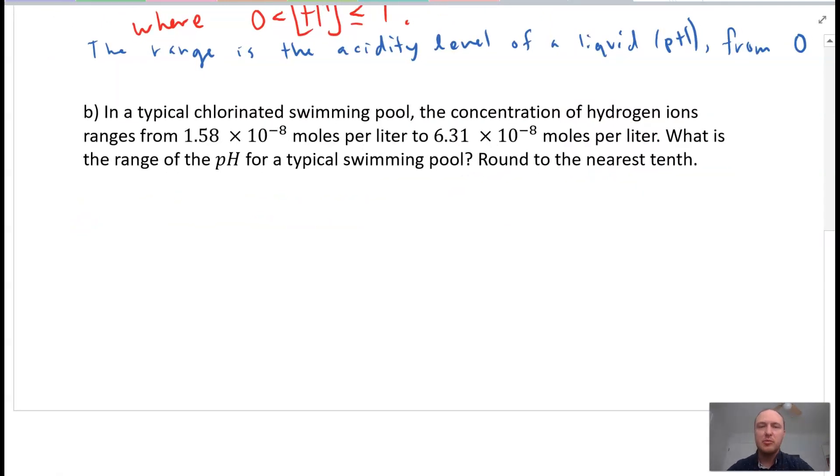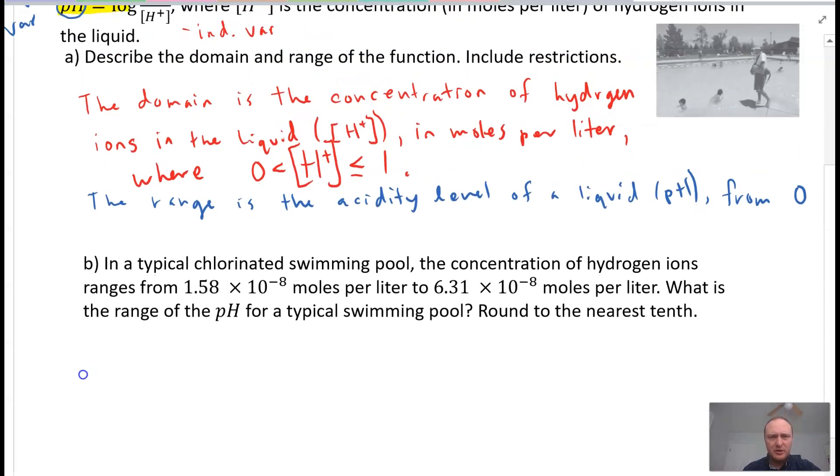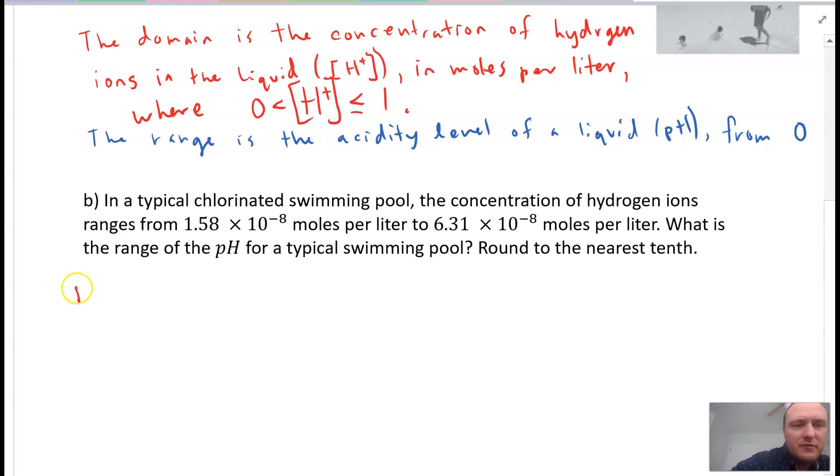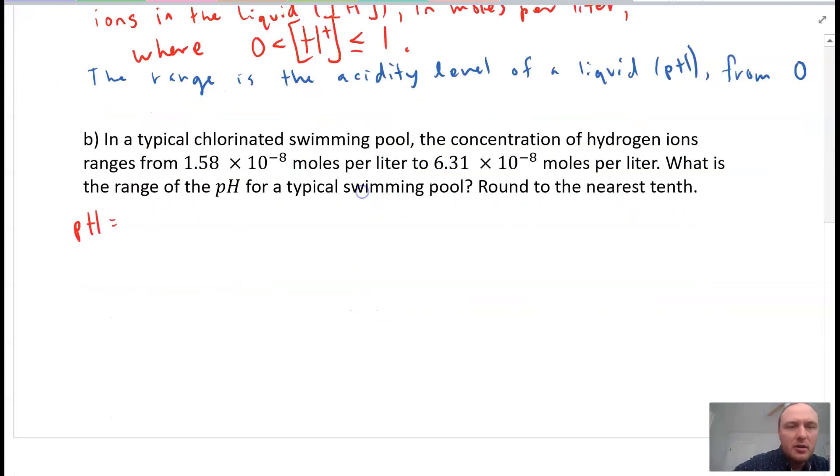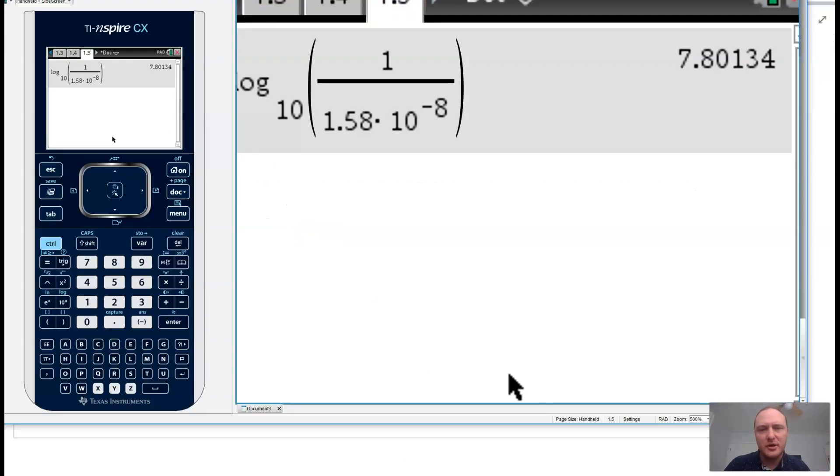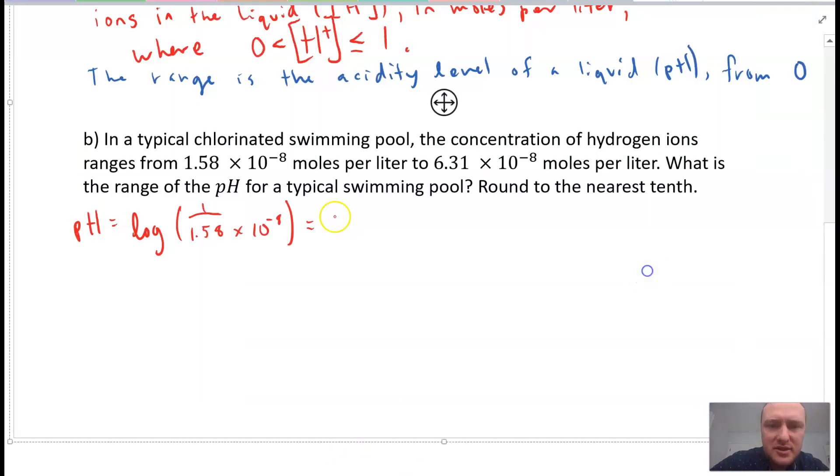So part B, it says in a typical chlorinated swimming pool, the concentration of hydrogen ions ranges from 1.58 times 10 to the power of negative 8 moles per liter to 6.31 times 10 to the negative 8 moles per liter. What is the range for the pH of a typical swimming pool? So we're going to utilize our formula, pH equals log of 1 over, and we'll use our first value, so 1.58 times 10 to the power of negative 8. And this will be equal to, and we go ahead and just plug it into our calculator. I've kind of already pre-done that here, and then we get 7.8. And our problem says round to the nearest tenth, so this is approximately 7.8.